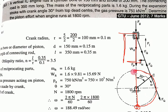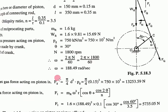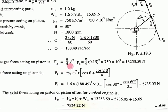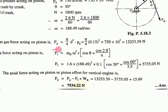Calculate weight Wr = 1.6 × 9.81 = 15.69 N. Gas force Fg = π/4 d² pg = π/4 (0.15)² × 750 × 10³ = 13253.59 N. Inertia force is only calculated for vertical pistons: Fi = mω²r[cos θ + cos 2θ/n] = 1.6 × (188.49)² × 0.1[cos 30° + cos 60°/3.5] = 5735.05 N.